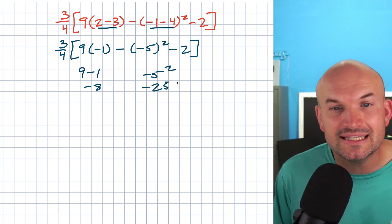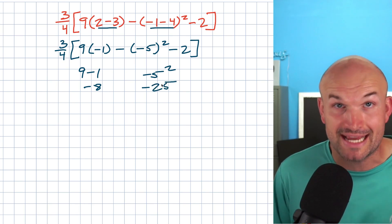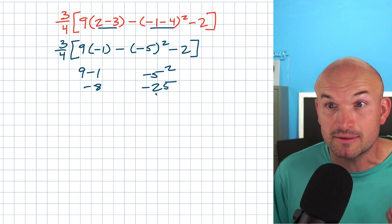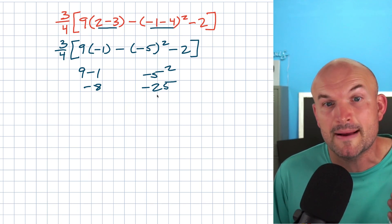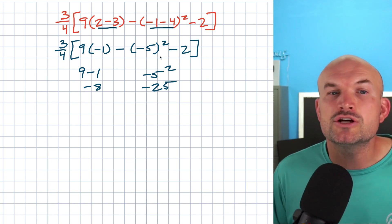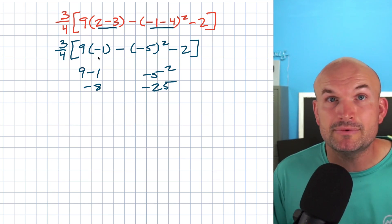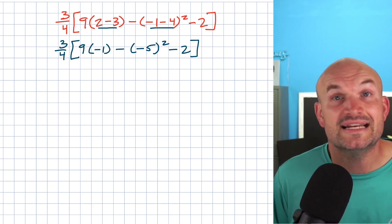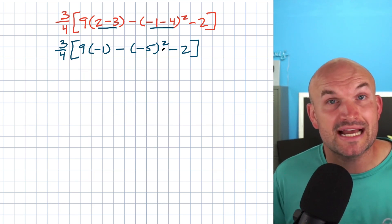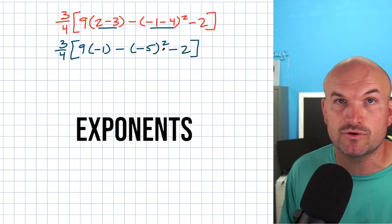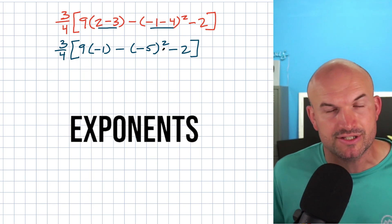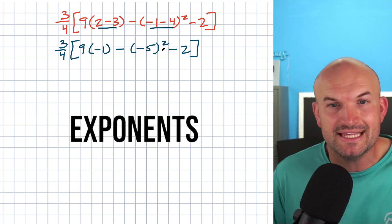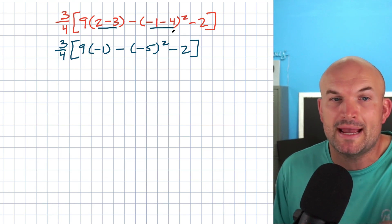So negative five times negative five is a positive 25. It would give you a completely different answer — negative 25 is completely different than positive 25. So please make sure you keep those parentheses until you apply the operation. Now let's get into the next operation, which is exponents or powers — anything being raised to a power.